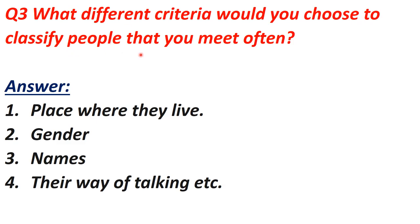Question 3: What different criteria would you choose to classify people that you meet often? Answer: You can classify people on the basis of the place where they live, their gender — male or female — their names, and their way of talking. You can choose any criteria to classify the people that you meet often.